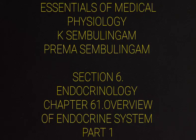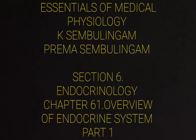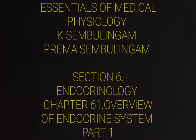This section deals with the Endocrine System, while Section 10 deals with the Nervous System. The Endocrine System functions by secreting chemical substances called hormones.